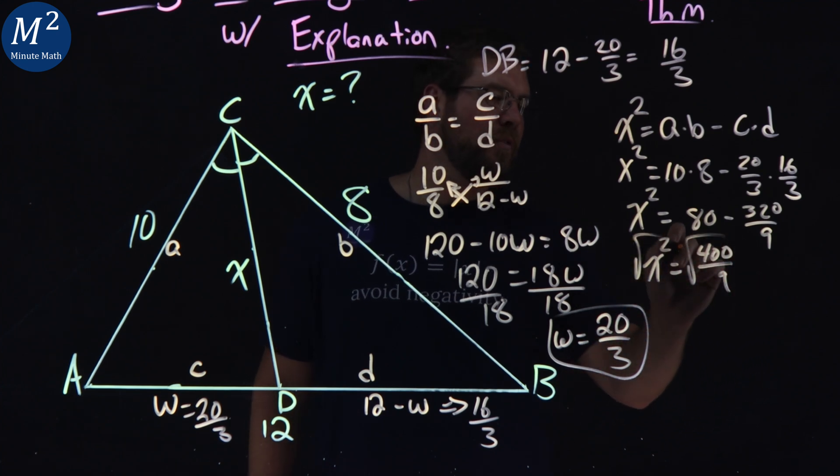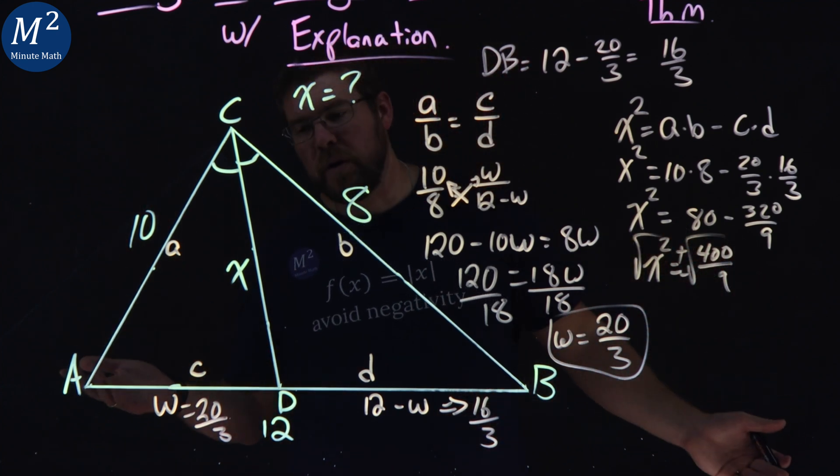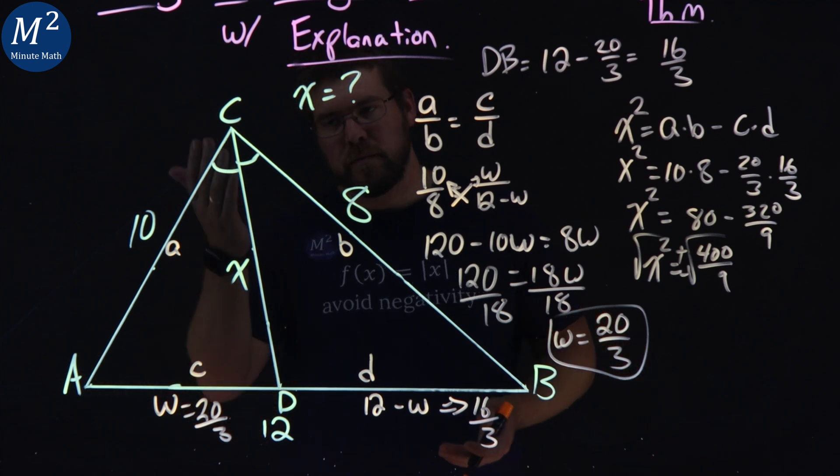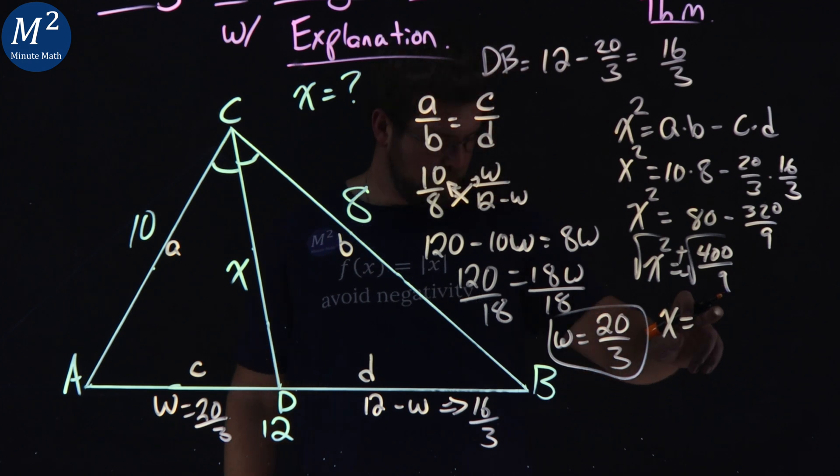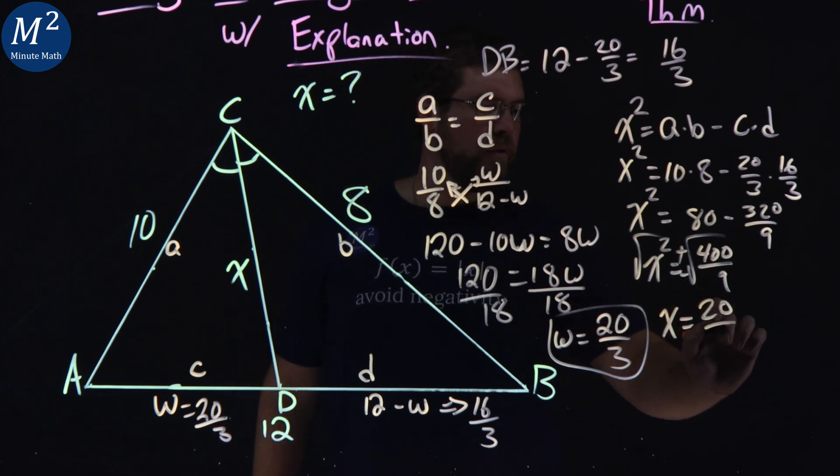So when you square root both sides, we know it's plus or minus, but you can assume the negative number here can't be applied. So we're only dealing with the positive. So x equals the numerator square root. We have 20 over 3. The square root of 9 is 3.